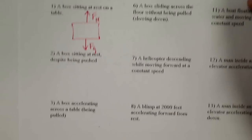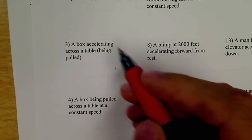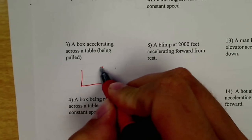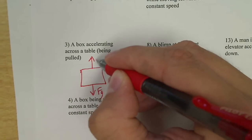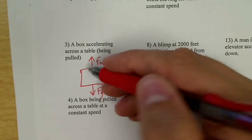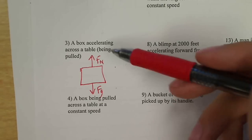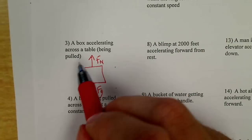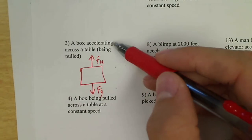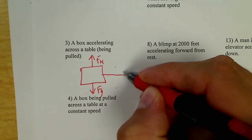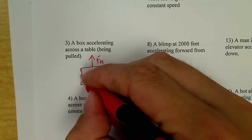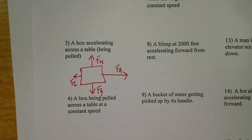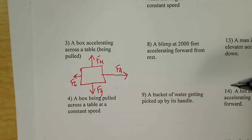If we look at a box accelerating across the table, it's being pulled. So in the vertical, it's still being pulled down by gravity, and it still has an equal and opposite force normal. These two forces are the same size. They're canceling each other out. We have no acceleration, no net force in the vertical. Now it is accelerating by being pulled. So there is an applied force, and then opposing motion would be a frictional force. Now this arrow is larger than this one, because it is being accelerated.